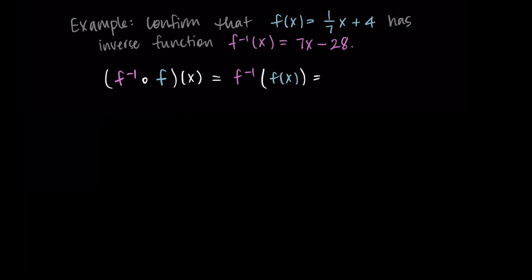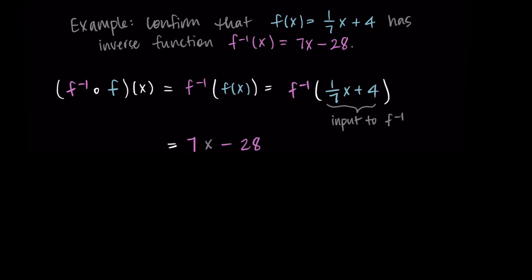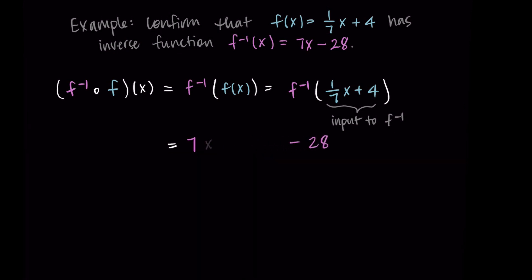I'll start with f inverse composed with f of x. The input is the function f, so I'm going to replace it with what we've been told the function is: one-seventh x plus 4. This expression is going to become the input to the inverse function. So rather than just having some x or y value, we have this entire expression replacing x as the input of f inverse. f inverse is 7x minus 28, so we take x and replace it with one-seventh x plus 4. So I have 7 times (one-seventh x plus 4), all minus 28.